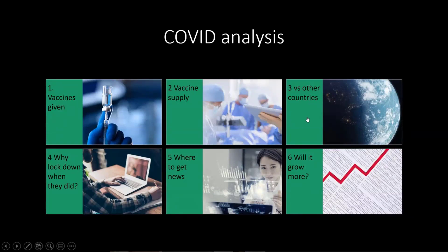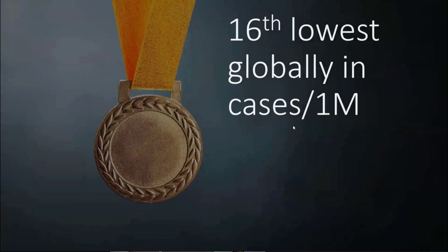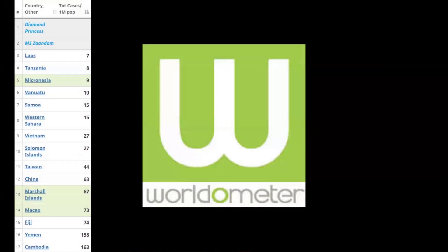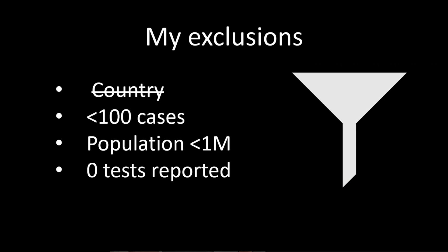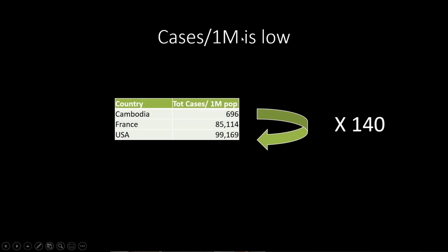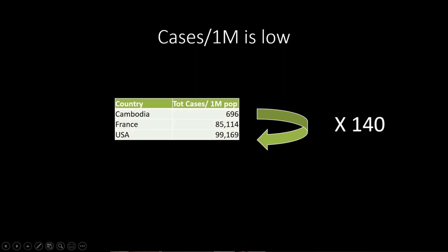Going next into Cambodia versus other countries. Cambodia, albeit going through its worst time, is still the 16th lowest globally in terms of cases per million — down from being the fourth lowest before the incident, but still very low in comparison to others. I get that data from the Worldometer website, excluding things that aren't countries, anything with less than 100 cases, small populations, and anything not accurately reporting testing. Cambodia's cases per million is still pretty low — 140 times lower than the US.